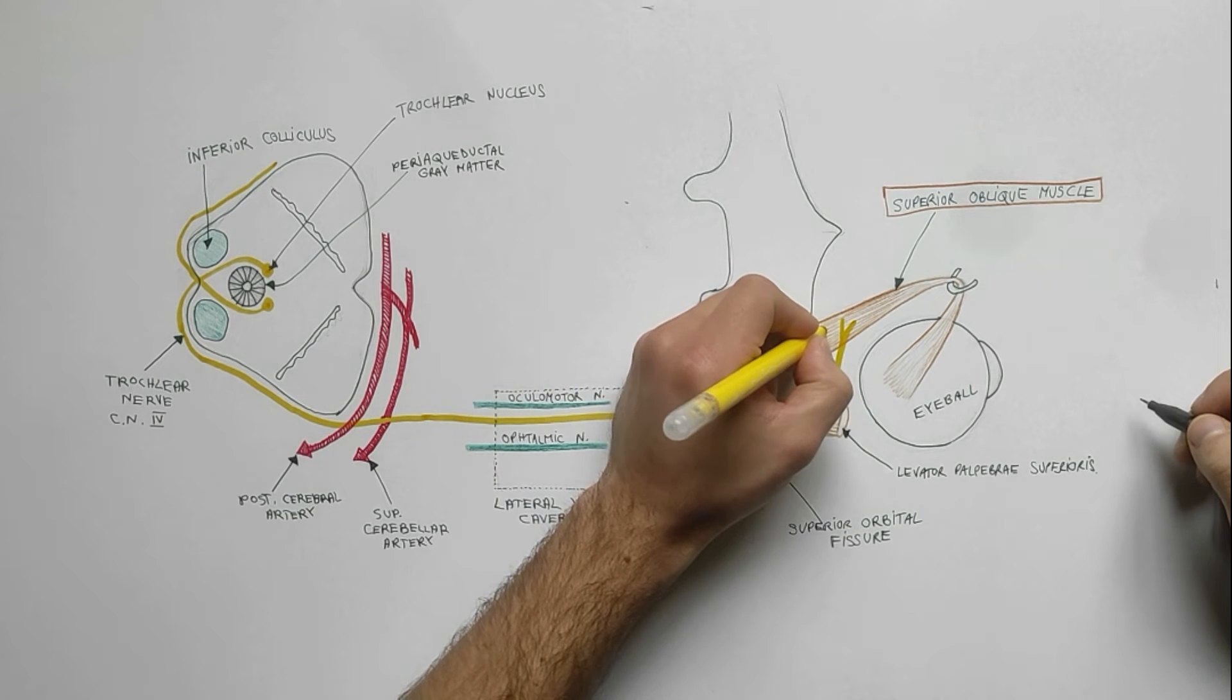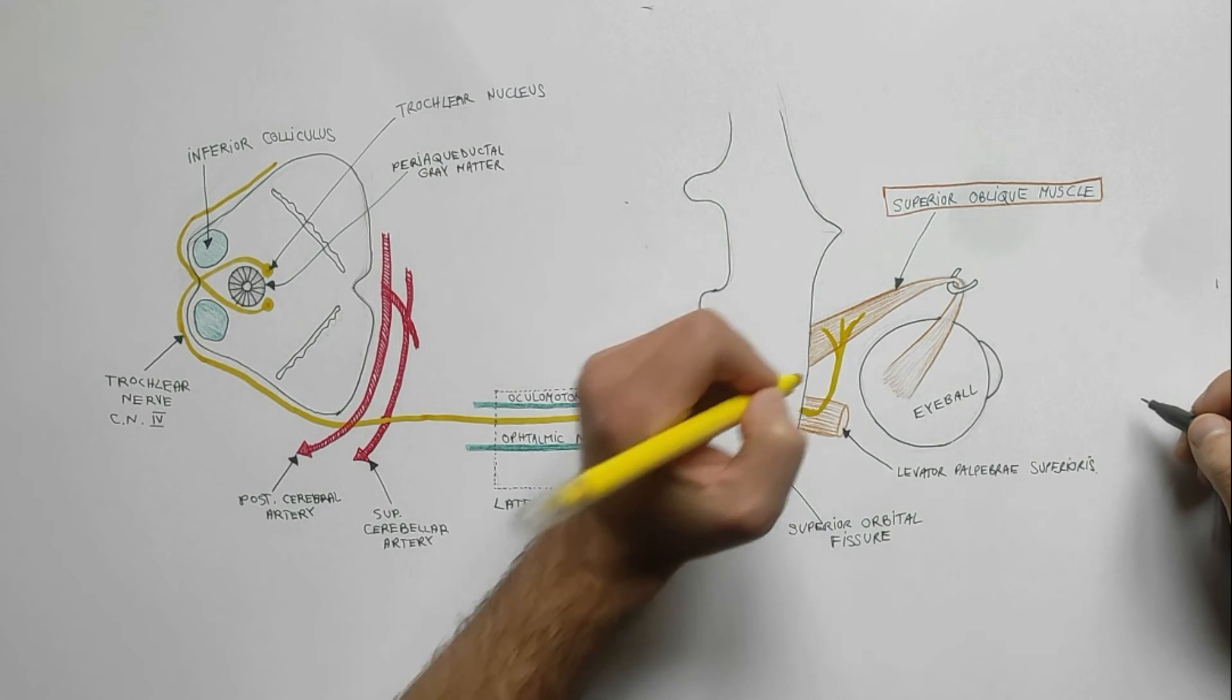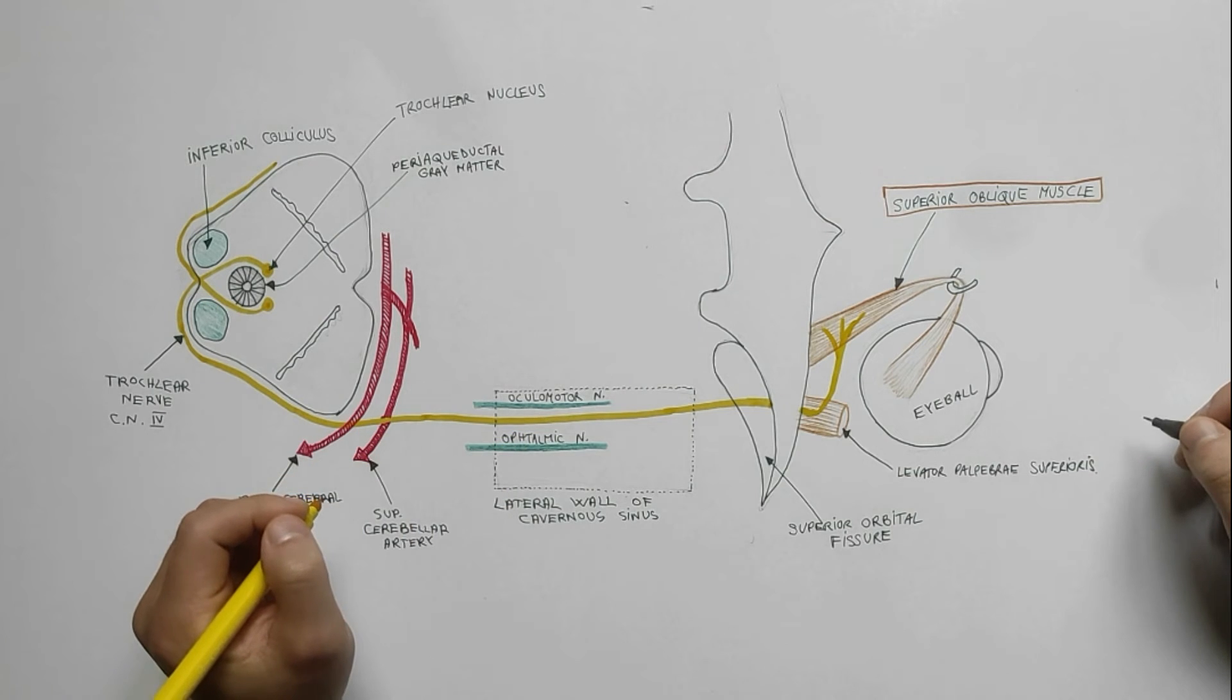Here the nerve divides into three or more branches that enter the superior oblique muscle along its proximal third.